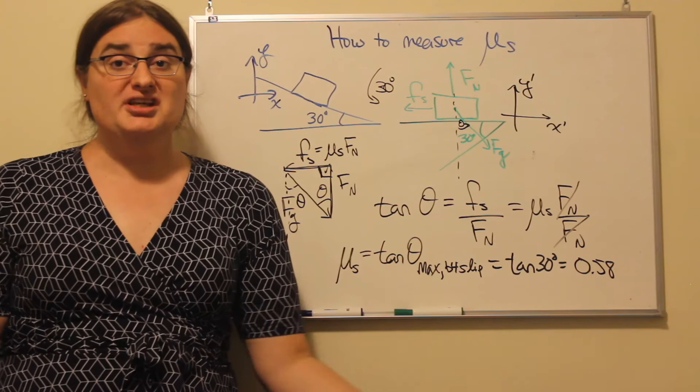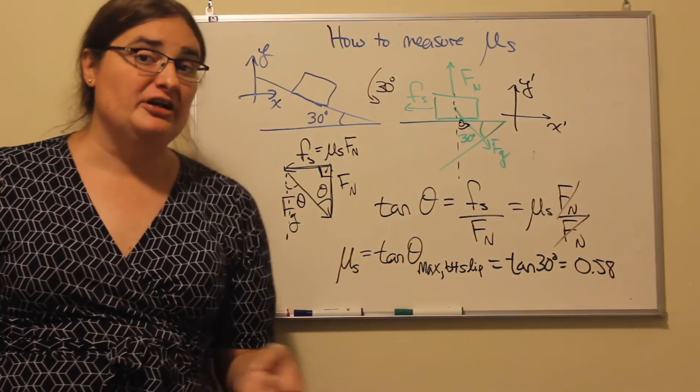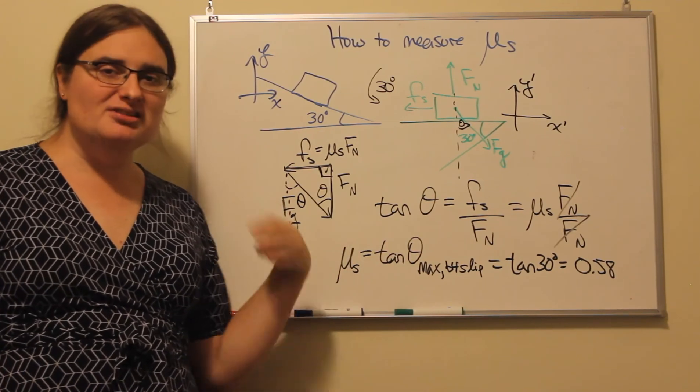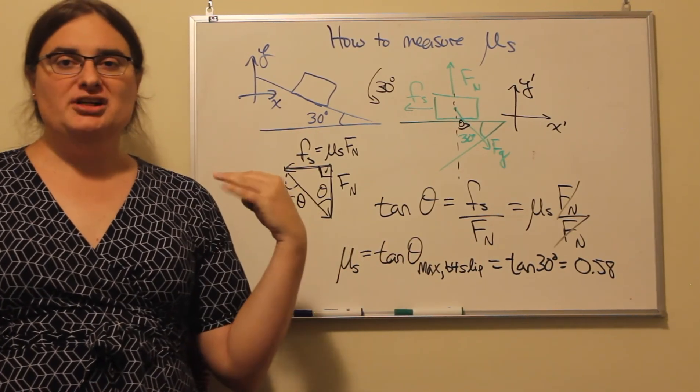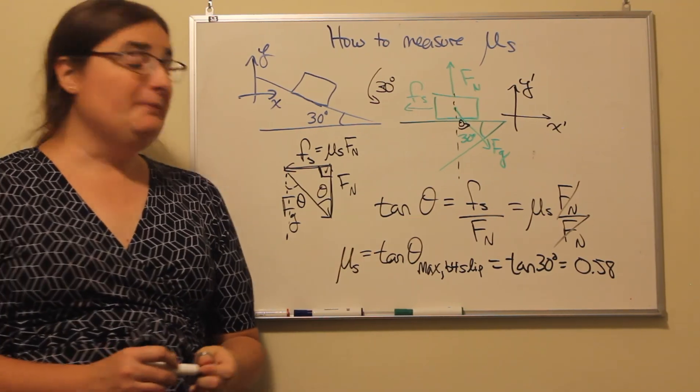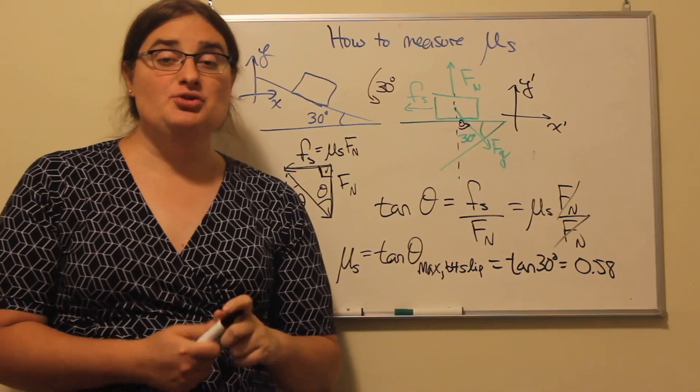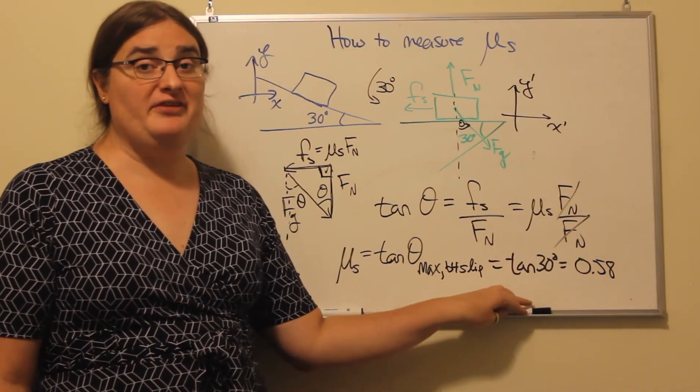The normal force cancels out, so that means then that the coefficient of static friction is the tangent of the maximum angle that an object will sit on a ramp before slipping. So if that happens to be 30 degrees, then the coefficient of static friction between those two objects is 0.58.